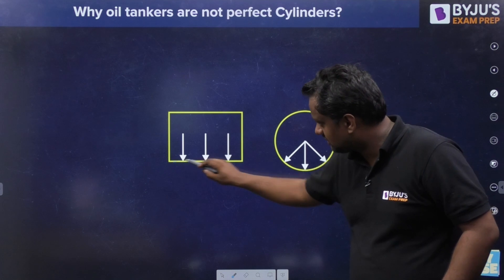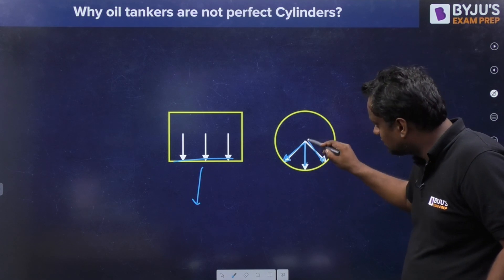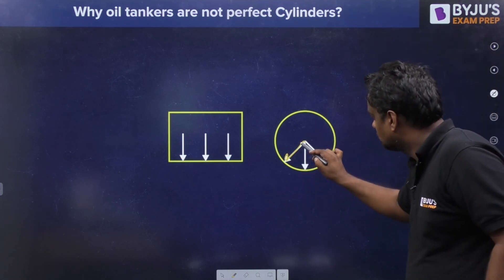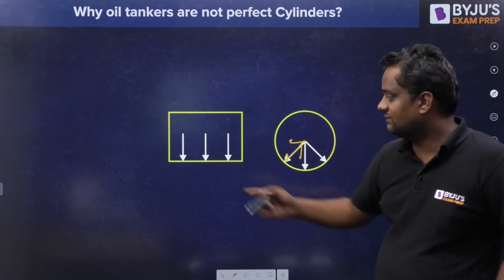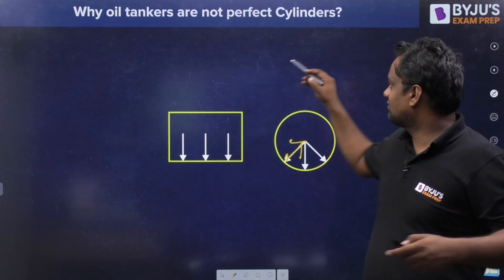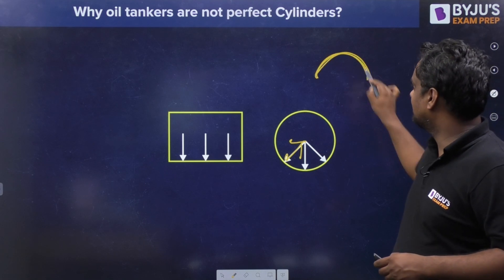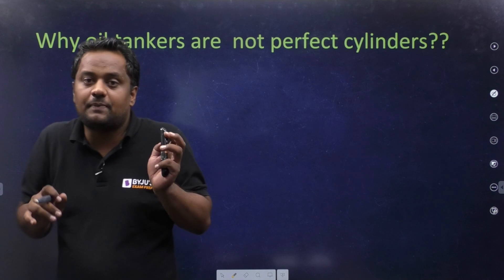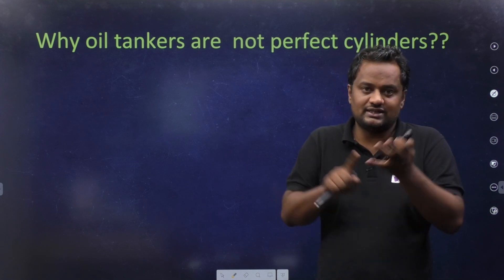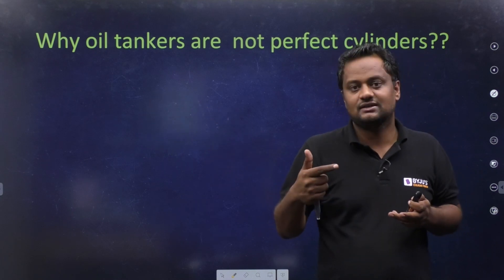One more thing: if the shape is rectangular, there is pressure at the bottom with a large vertical component from fluid pressure. But with a curved shape, the fluid pressure vector has both a vertical and horizontal component, so the net vertical stress is less. This is the same reason why tunnels are made circular or curved — the net stress on the structure is lesser with a curved shape.